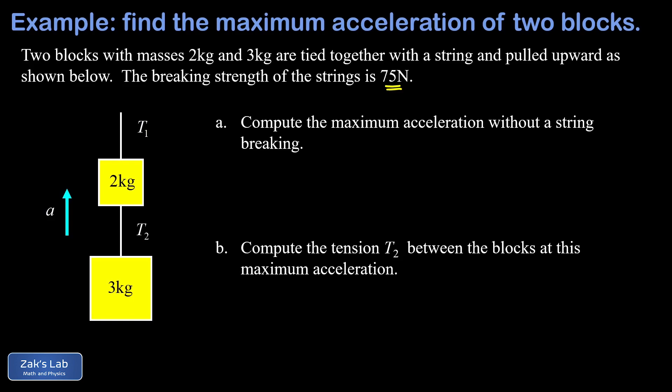So the key starting point here is to realize that T1, that's the tension in the upper string, that's responsible for accelerating all five kilograms of mass here, so that one's always going to have a bigger tension. And that means we'll get our maximum acceleration when we push T1 right up to the breaking strength of 75 newtons.